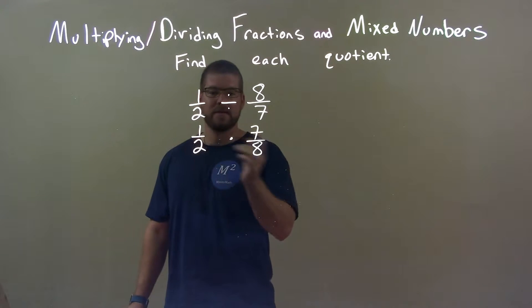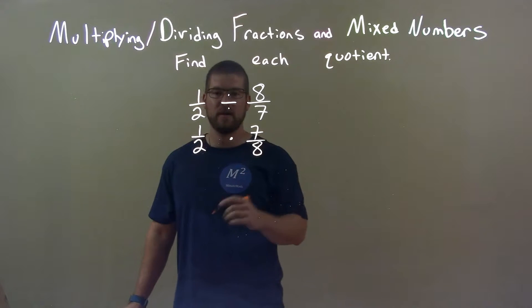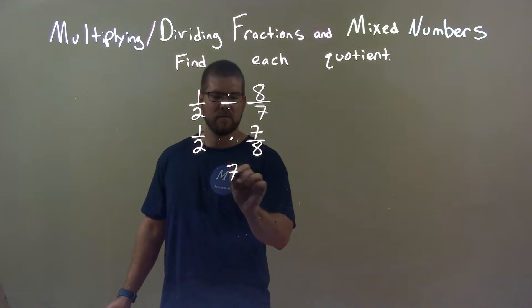Now let's multiply these out, multiply across the numerator, multiply across the denominator. One times seven, seven. Two times eight, sixteen.